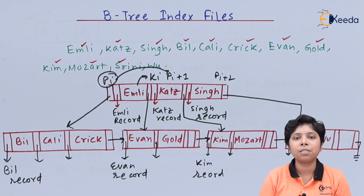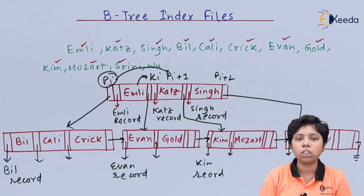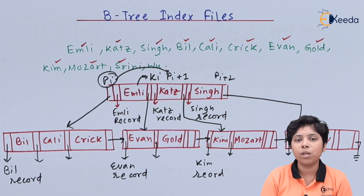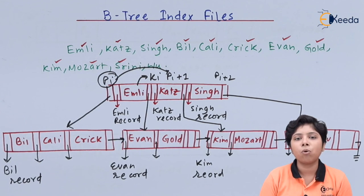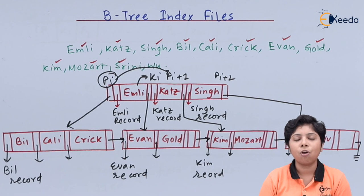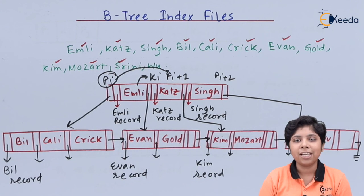Most database organizations do not find the complexities of B tree index files worth the overhead and instead use B plus 3 index files, sometimes calling them B tree index files. Storing values in non-leaf nodes (B tree) versus only in leaf nodes (B plus 3) is a design choice for DBMS representation in a given enterprise. That is all for today — thank you for watching, stay tuned with Iqira and subscribe to Iqira.